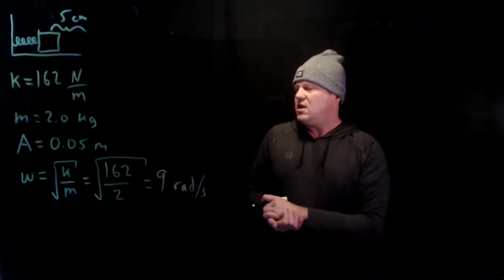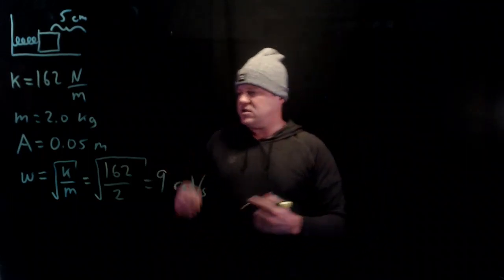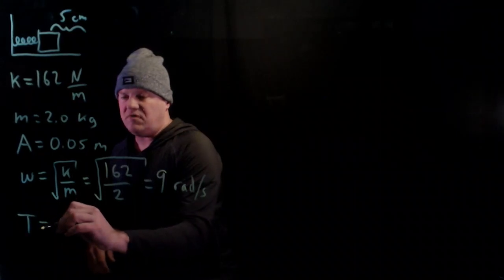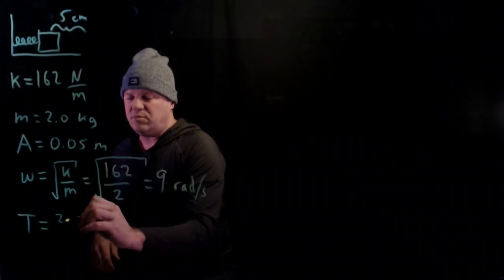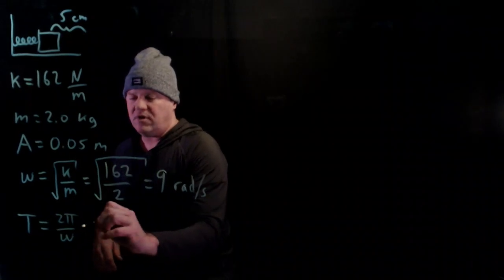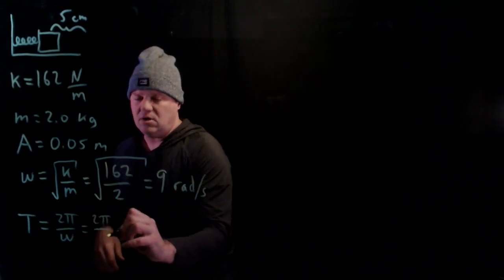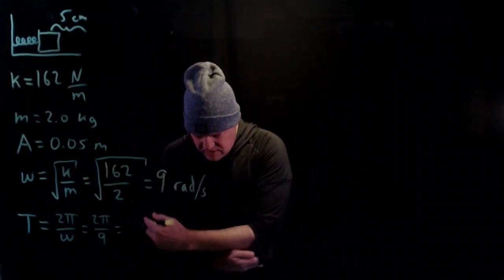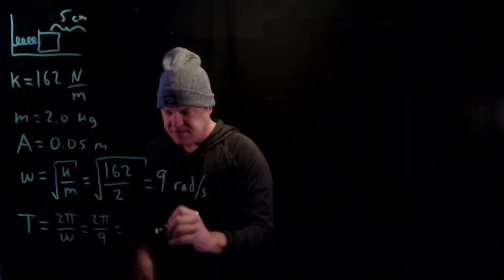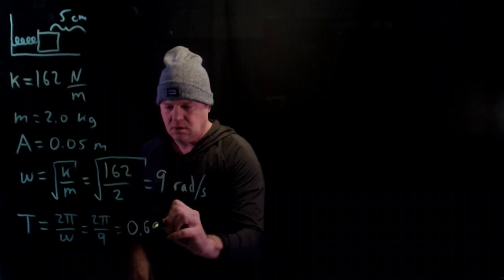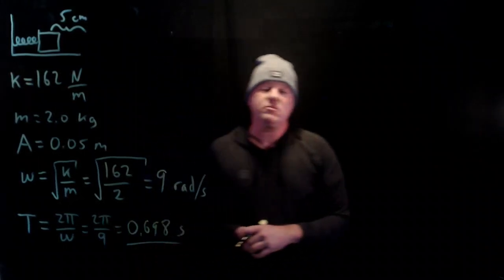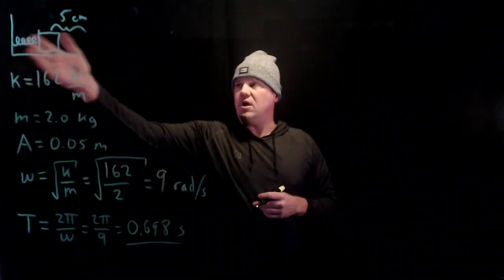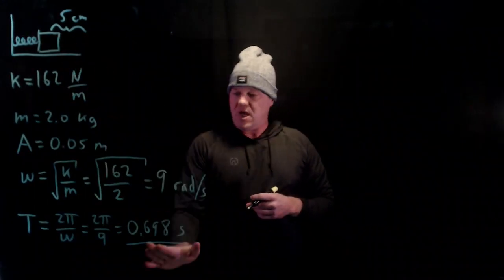We can calculate the period, which we can derive as 2π√(m/k), or we can just do 2π over angular frequency. So 2π/9 gives me T = 0.698 seconds. This is something we can think about in terms of a stopwatch. We pull this thing to the right 5 centimeters, let go, and it bounces back and forth.